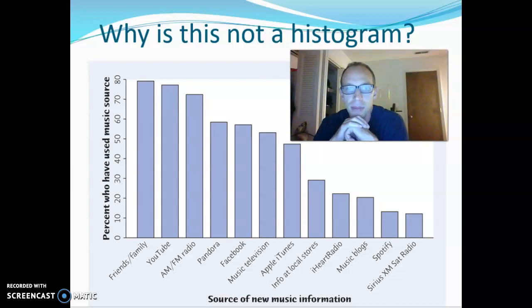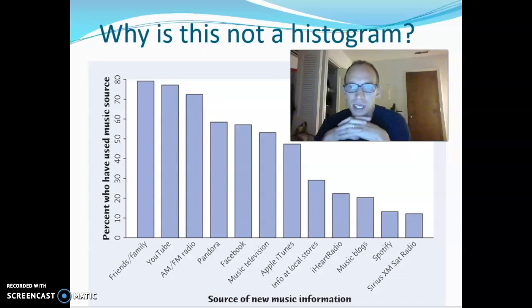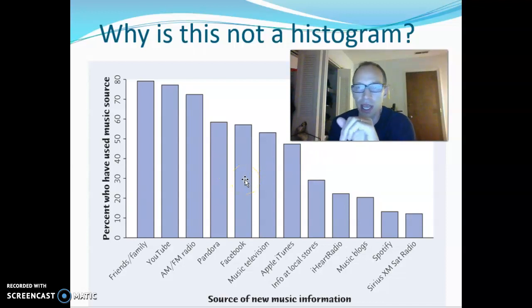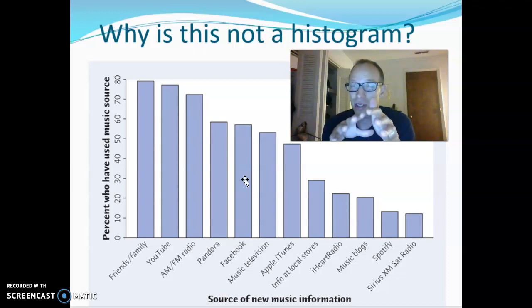I want to start with a common misconception between histograms and bar charts. They're often confused because they look very similar. Sometimes people say if there's spaces between the bars, it's a bar chart, and if not, it's a histogram. And that actually does play out pretty well, but it's not the real reason. There are certainly exceptions, so that's not what we should use as a reason.